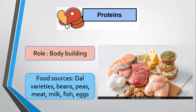Meat, milk, fish and eggs are animal sources of proteins. Dal varieties, beans, pulses, groundnuts and dry fruits are examples of plant sources of proteins.